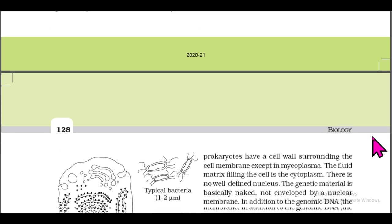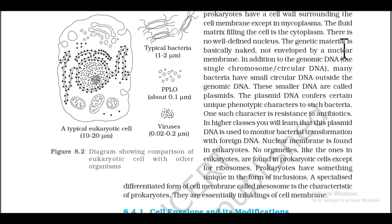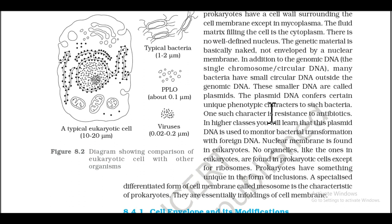All prokaryotes have a cell wall surrounding the cell membrane, except in mycoplasma. The fluid matrix filling the cell is the cytoplasm. There is no well-defined nucleus; the genetic material is basically naked, not enveloped by a nuclear membrane. In addition to the genomic DNA (a single circular chromosome), many bacteria have small circular DNA outside the genomic DNA called plasmids. Plasmid DNA confers certain unique phenotypic characters, such as resistance to antibiotics.